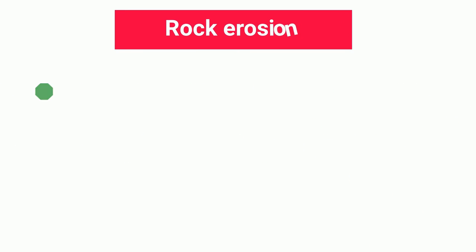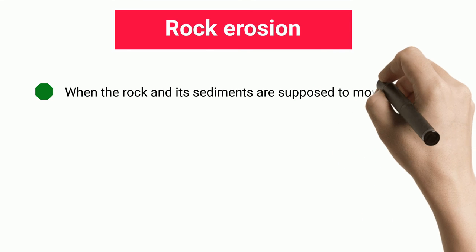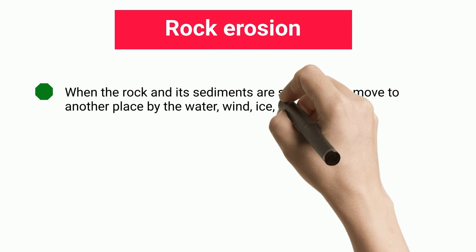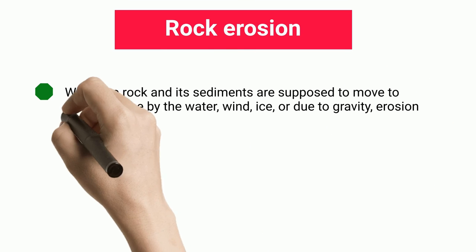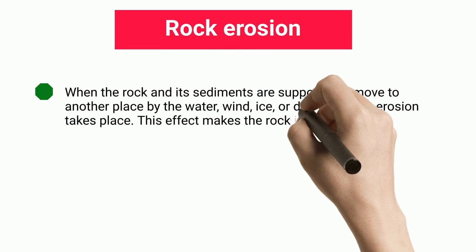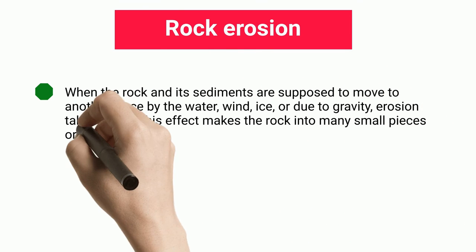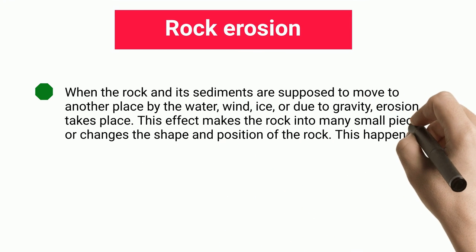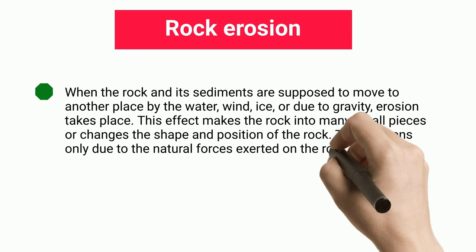Rock erosion: when rock and its sediments are moved to another place by water, wind, ice, or due to gravity, erosion takes place. This effect breaks the rock into many small pieces or changes the shape and position of the rock, happening only due to natural forces exerted on the rock.